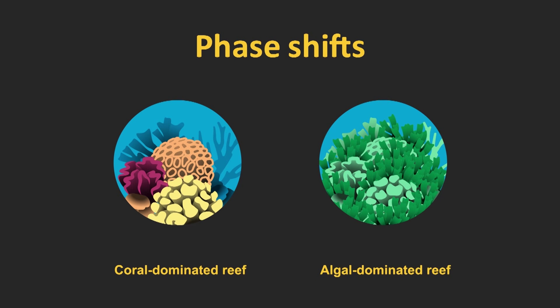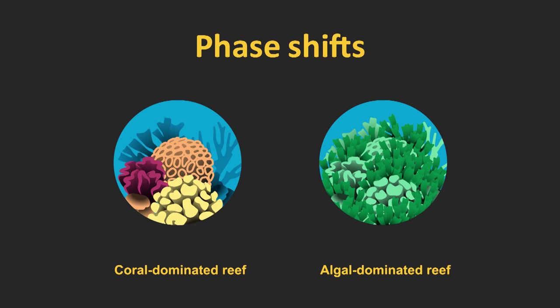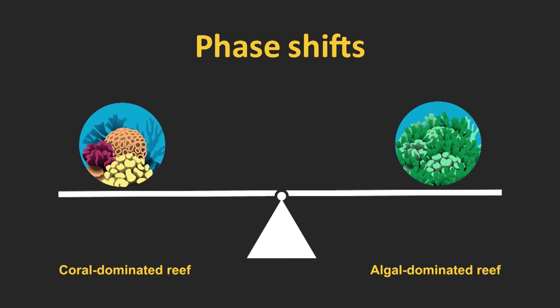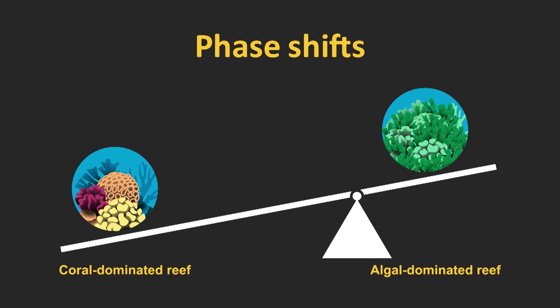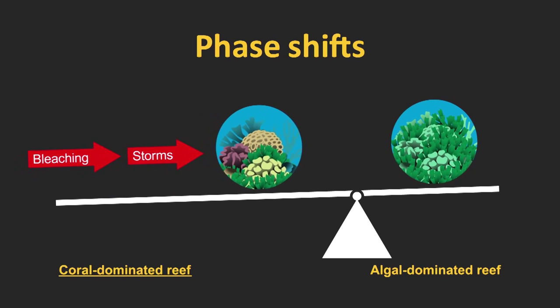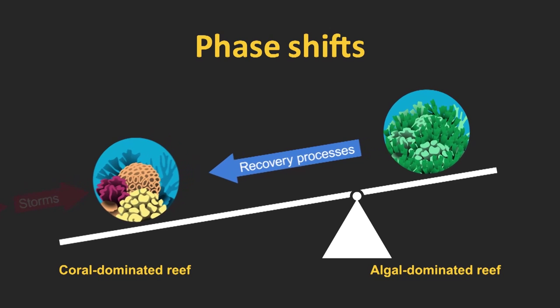We can think about this more generally when we think of phase shifts. A phase shift is a term we give to a fundamental change in the community structure of an ecosystem. There are two different alternatives: ideally we would be in the coral-dominated state with lots of coral, but the alternative is a reef covered in seaweed — an algal-dominated state. We can imagine this as a seesaw with a fulcrum, and ideally you want the heavy end of the seesaw to be the one with the corals. Processes like storms and coral bleaching events tend to push coral cover towards the algal end, but natural recovery processes should help coral cover increase again and restore the ecosystem.